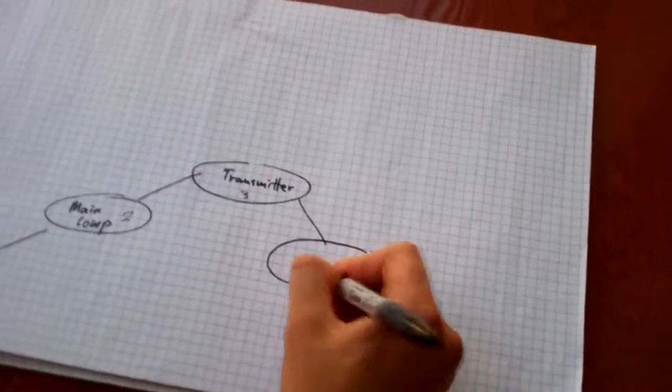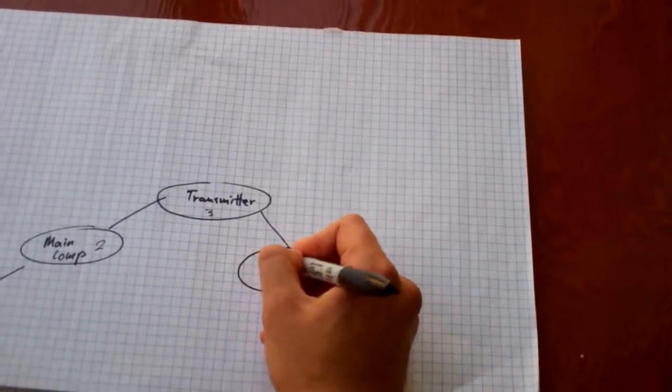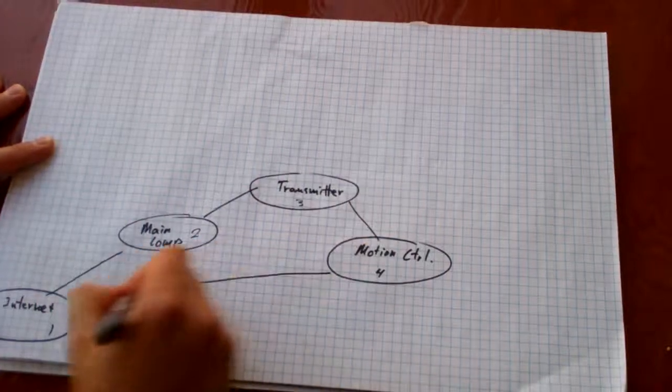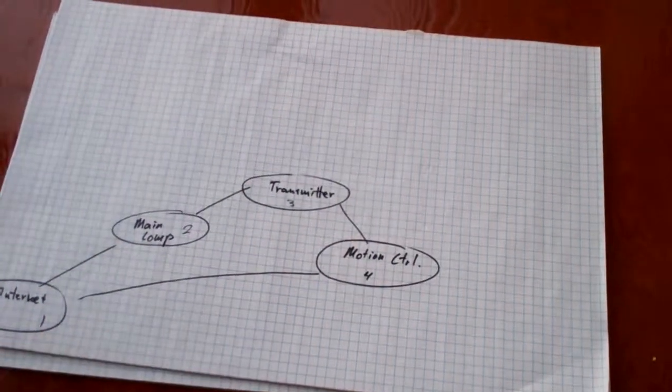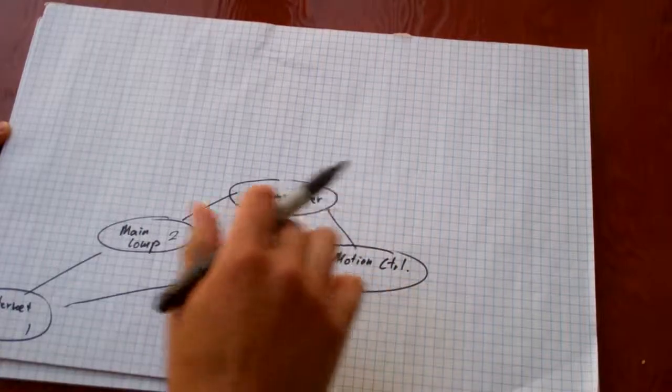And then we'll go into device 4 which is our motion control and then our motion control will talk back to the internet. So this is for our ground station.